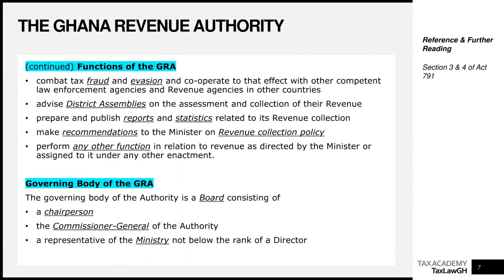Another function is to combat tax fraud and evasion and to cooperate with other competent law enforcement agencies and revenue authorities in other countries. GRA collaborates with revenue authorities globally to fight tax fraud and evasion. This is done through exchange of information agreements, tax information exchange agreements, and common reporting standards, all aimed at ensuring tax transparency between different territories and reducing tax evasion globally.